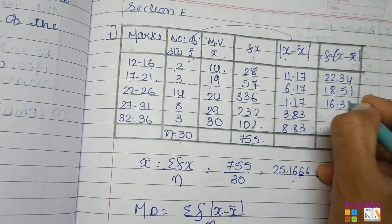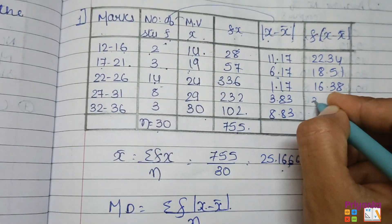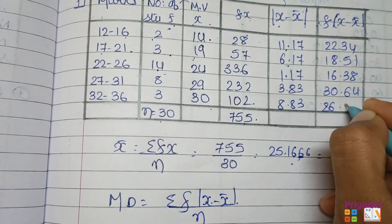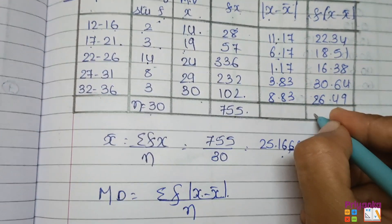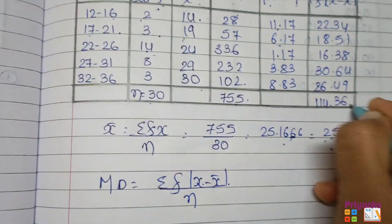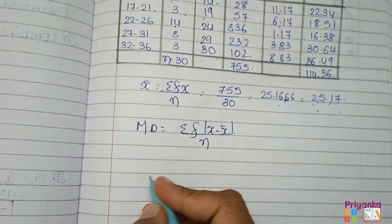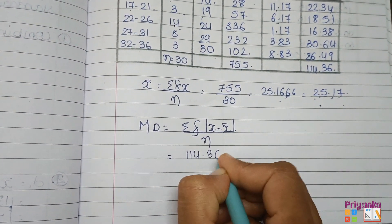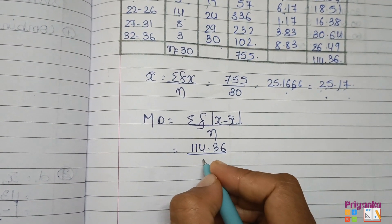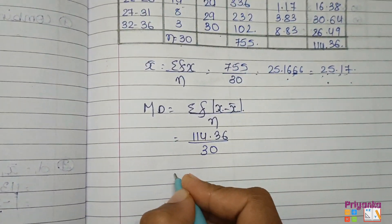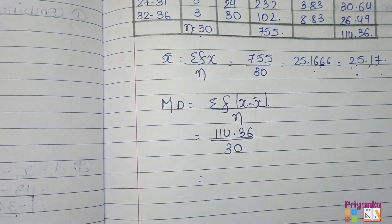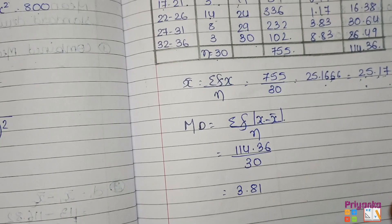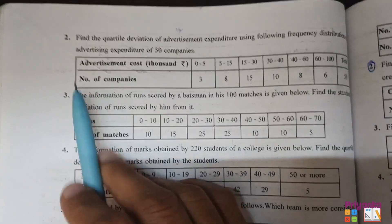Continue multiplying the remaining values with their frequencies. The total of the f|x minus x̄| column gives 114.36. Now apply the formula: 114.36 divided by n which is 30, and you get 3.81. So the mean deviation is 3.81. Moving to the next question of Section E.